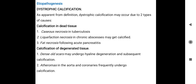Calcification of degenerated tissues: the tissue is degenerated. The gland tissue can degenerate and become enlarged, with bleeding scars. Hyaline degeneration and subsequent calcification can occur in small amounts. Atheromas in the aorta and coronary arteries frequently undergo calcification — in atherosclerosis, fat is deposited in the aorta and coronary arteries, which then becomes calcified.